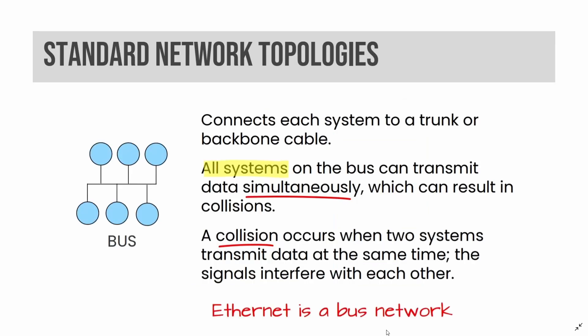A bus network topology connects each system to a trunk or backbone cable. All systems on the bus can transmit data simultaneously, which can result in collisions. A collision occurs when two systems transmit data at the same time and the signals interfere with each other. Ethernet is an example of a bus network.